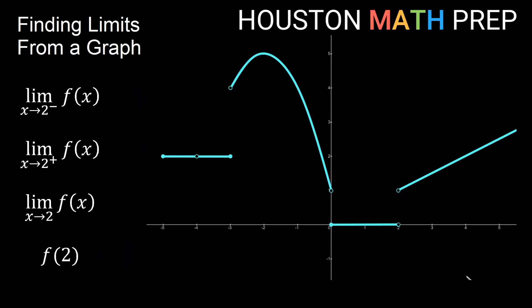Looking at the last set of examples around x equals 2: we have one piece approaching from the left and one from the right. From the left, we're on the horizontal piece approaching an open hole at y equals 0, so that limit is 0. From the right, we're on the sloped diagonal line approaching an open hole at y equals 1, so the limit from the positive direction is 1. Since these one-sided limits are different, the overall limit as x approaches 2 does not exist.